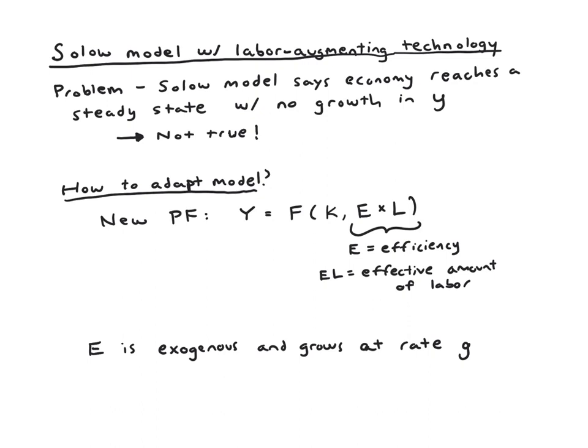And then the way we're going to make output per worker continuously grow in the long run is to say that this E, this efficiency, is exogenous, and it grows at rate g. Now, you might say, isn't that kind of unsatisfying as an answer? Or don't we want to actually, isn't the point to explain why E grows, why people get more efficient, and why maybe at some points in history E has grown fast and at other points it has grown slowly?